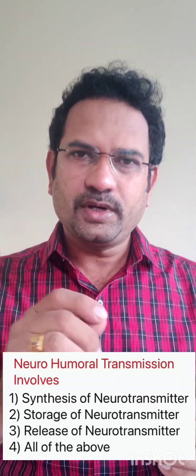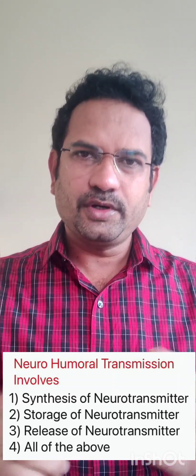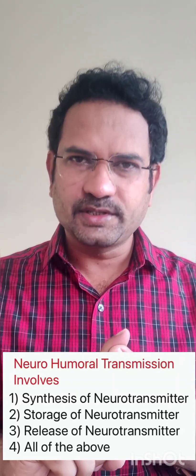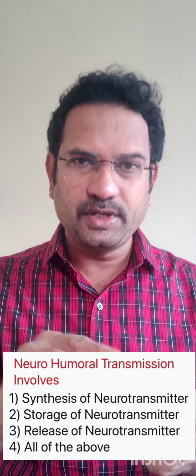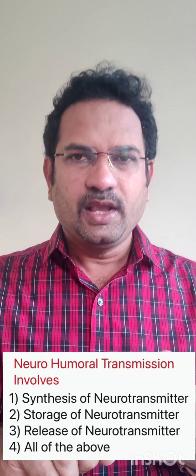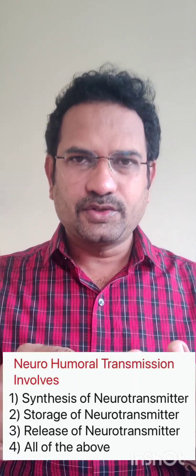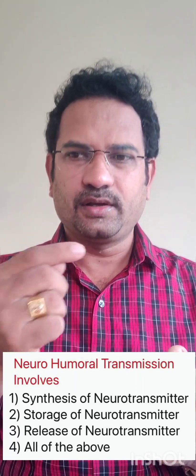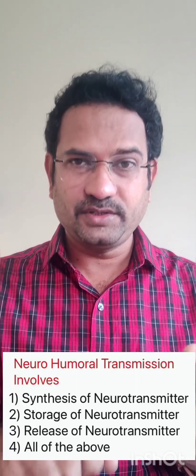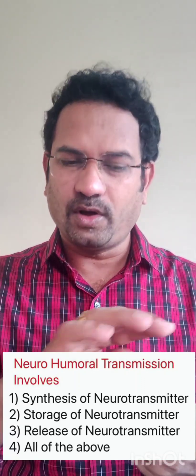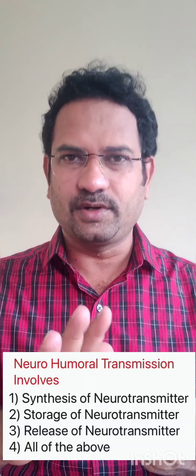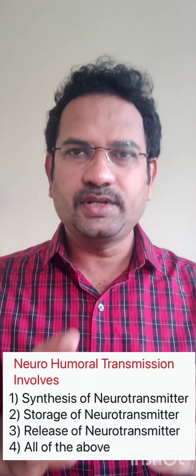The steps are: at the end of a neuron, a neurotransmitter is synthesized. It is stored in a vesicle and released to show its effects. So all the steps are involved, and the answer is option D — all of them. Let us see the next question.